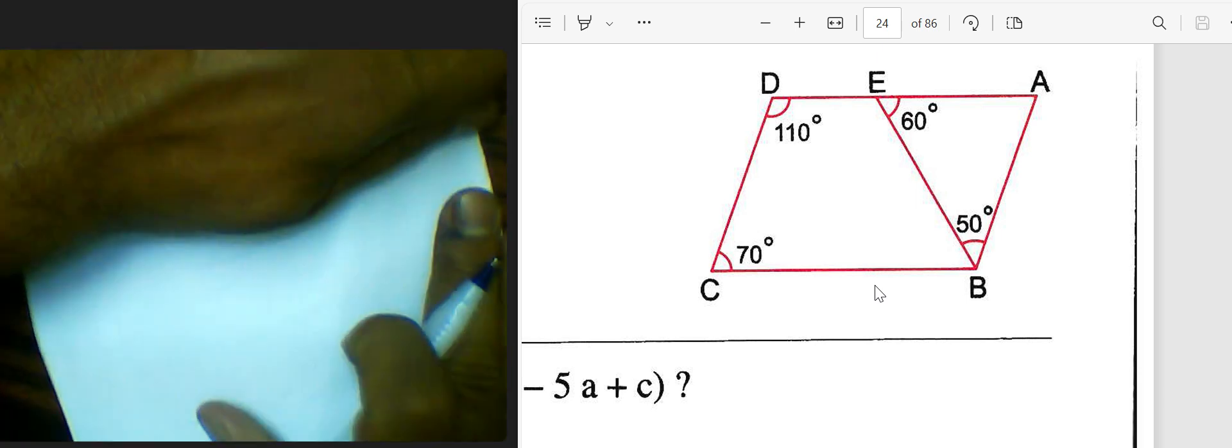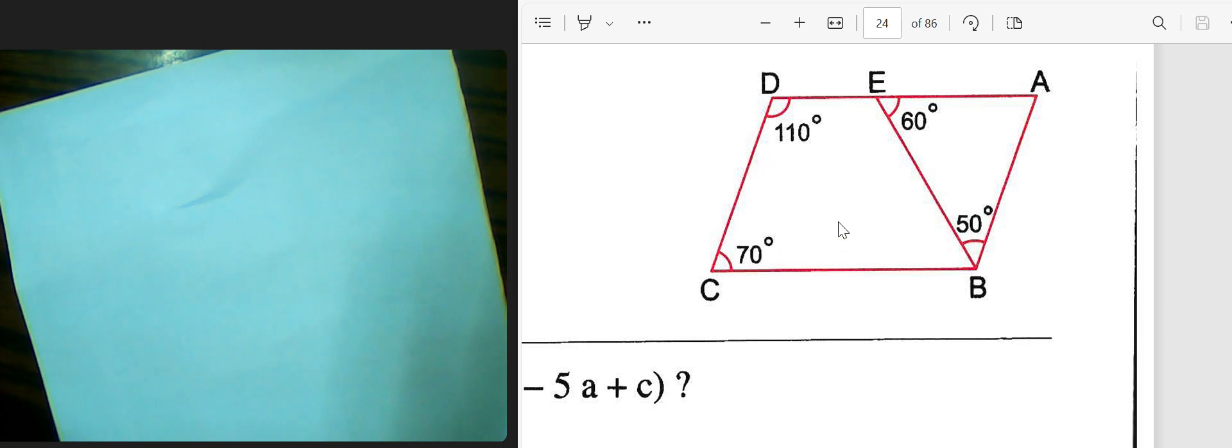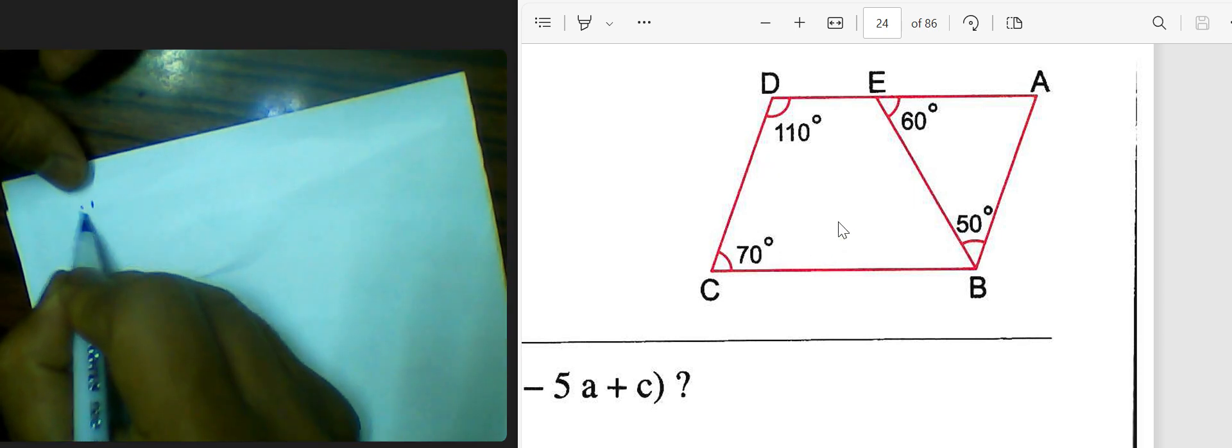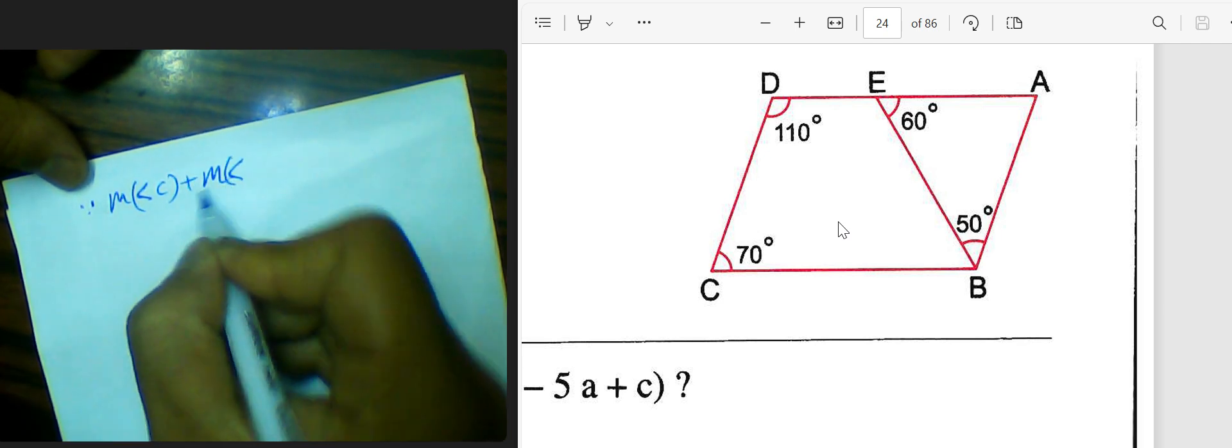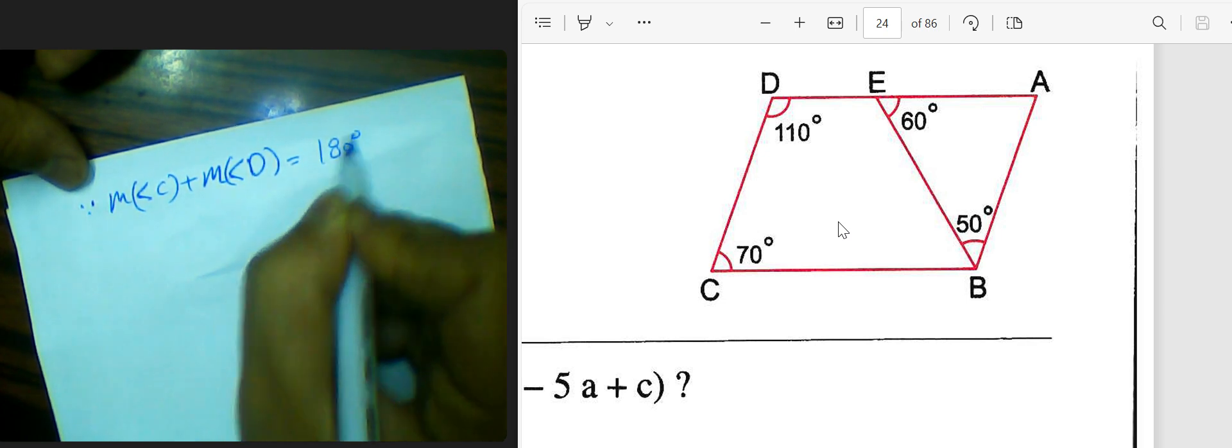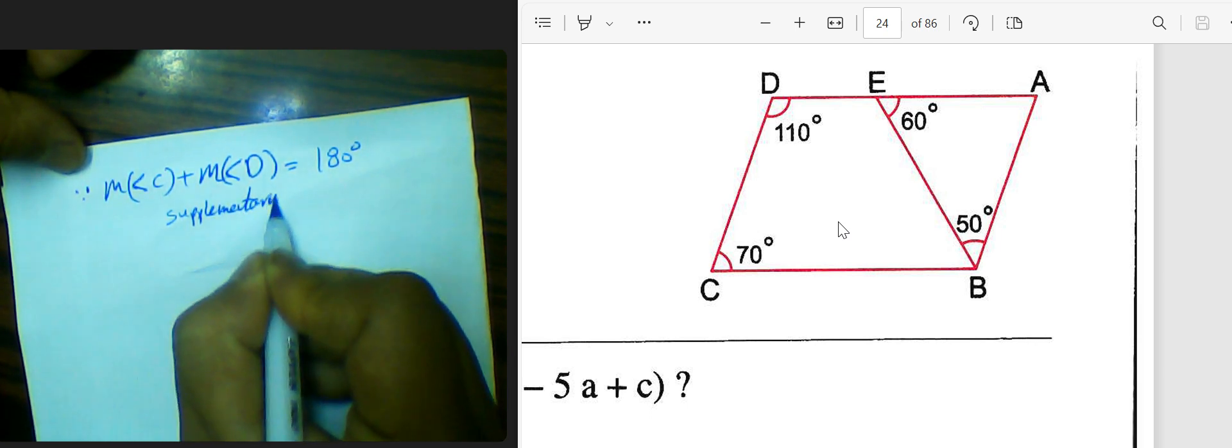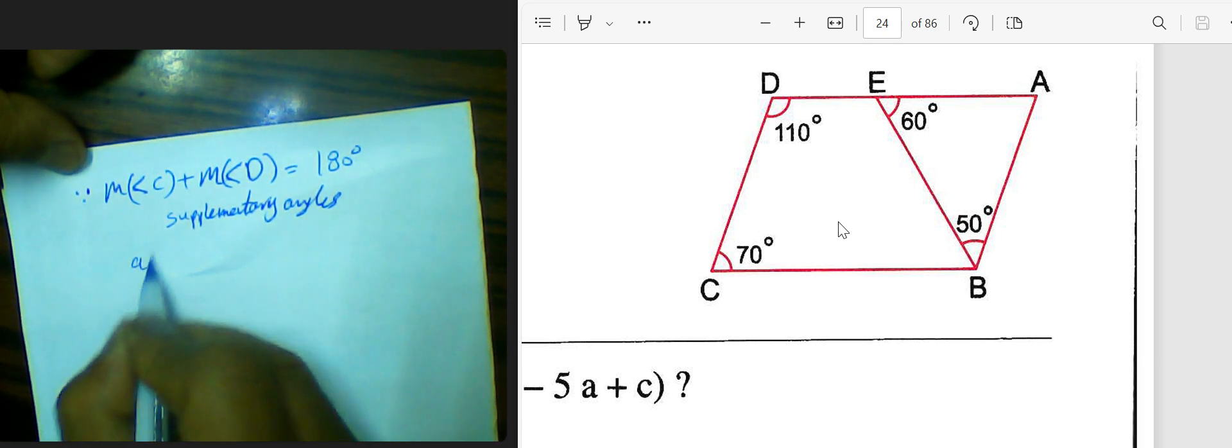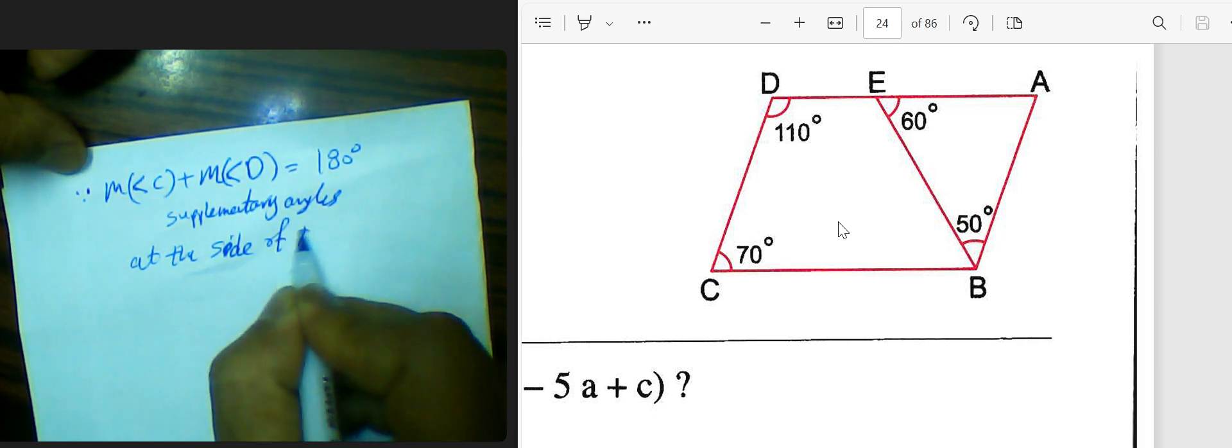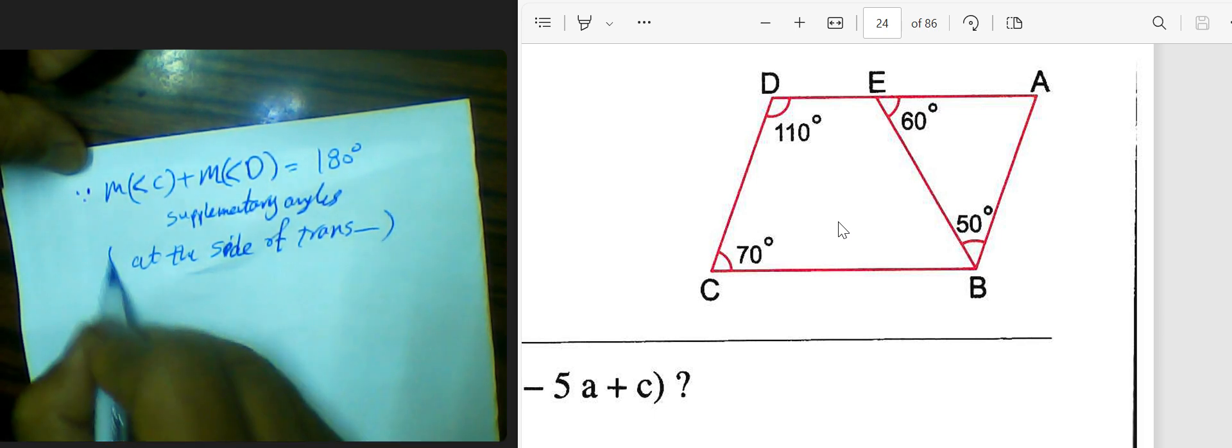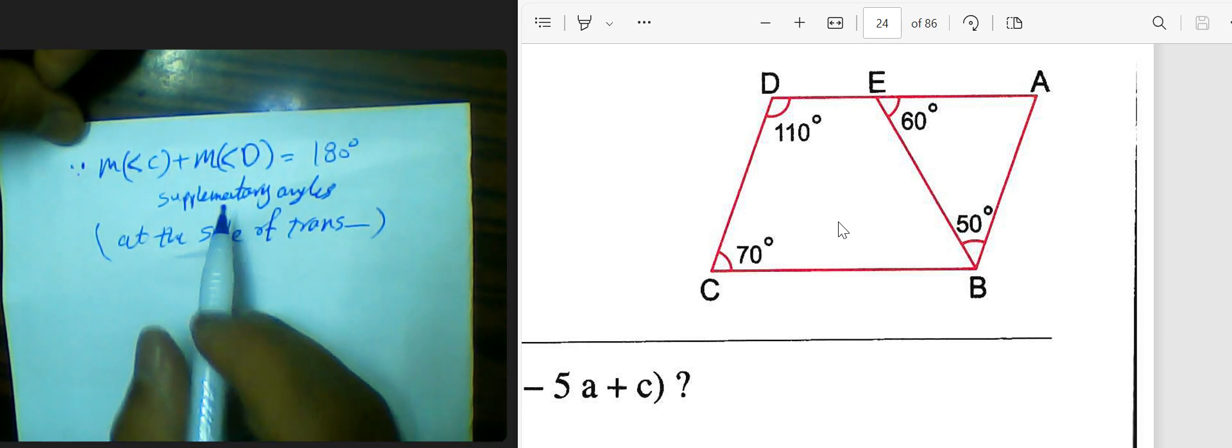The second thing: measure of angle C plus measure of angle B. When you do them plus, it will be 180, such as 70 plus 110 equals 180. Measure of angle C plus measure of angle D, the two will be 180 degrees, supplementary angles at the same side of transversal. When the two parallel lines are cut by a transversal, we're going to add to 180. At the same time, we will prove that angle A is also supplementary.